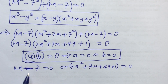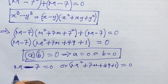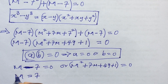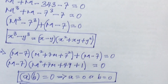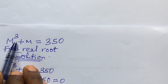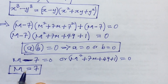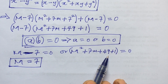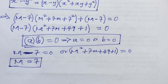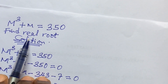From case one, m - 7 = 0 gives us m = 7. This is the first root of our equation. Since the polynomial is degree three, we expect three roots. We've found one; the remaining two should come from the quadratic equation. We were asked to find only the real roots.